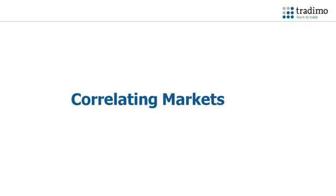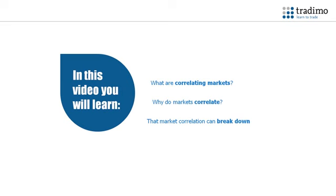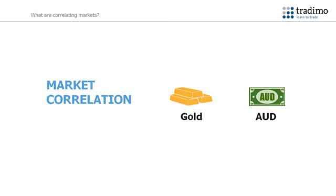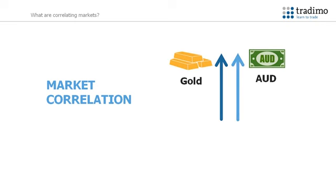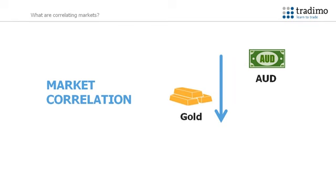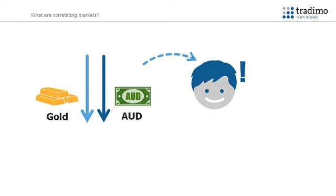This video will introduce you to correlating markets. In this video you will learn what correlating markets are, why markets correlate, and that market correlation can break down. Market correlation is where the price of two or more markets moves together in the same direction. Different markets correlate for different reasons, and understanding the fundamentals behind the correlation can present trading opportunities.